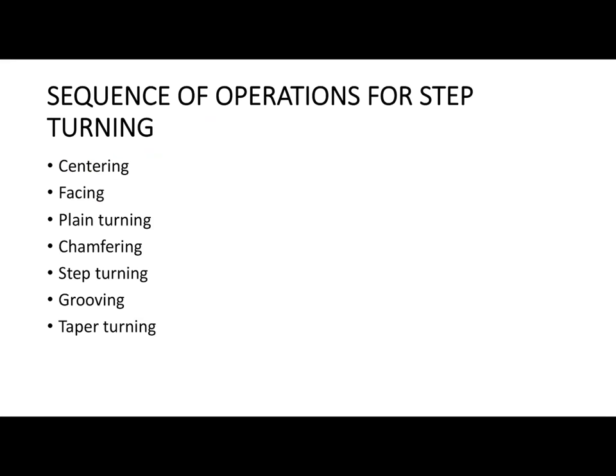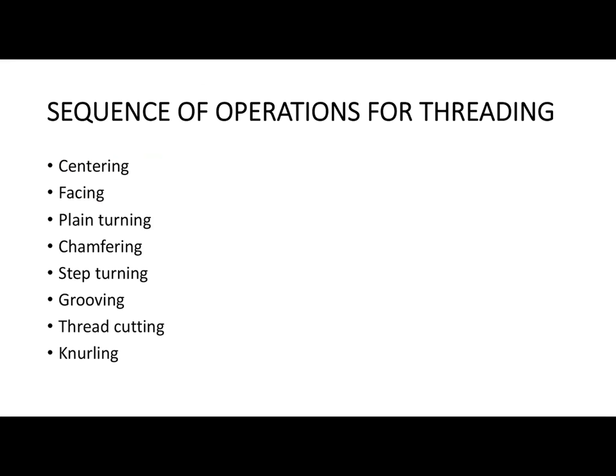Step turning is the main process where most material is removed. Chamfering is done if a chamfered edge is required at the beginning or end of the workpiece. Grooving can be done using the tailstock to create a groove inside the workpiece. There is also taper turning, and another operation is threading — to create bolts, for example — which can be done using the lathe machine.